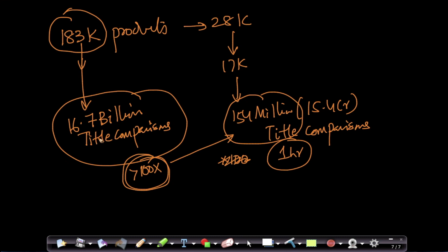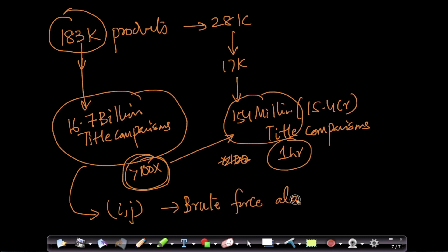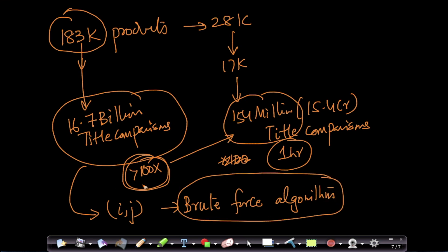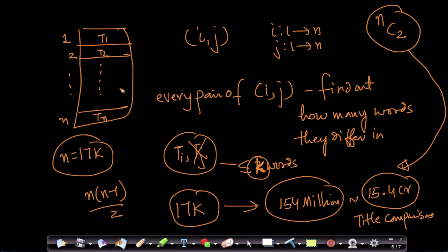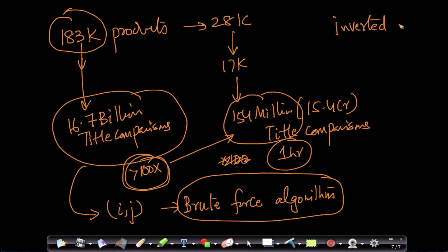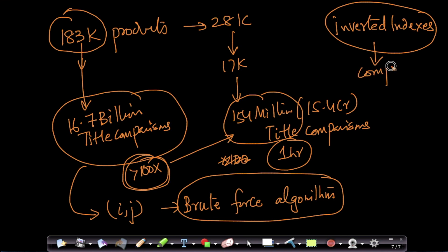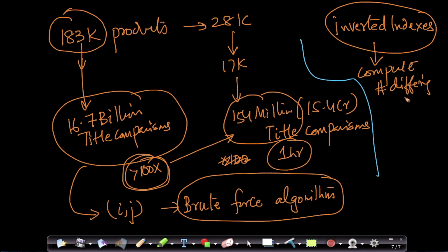In the real world, at large companies, processing such large amounts of data is done using much more efficient algorithms. What we are doing here — comparing every single pair — is called a brute-force algorithm. There are much more efficient algorithms using data structures like inverted indexes to compute the number of differing words amongst our titles.